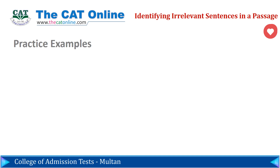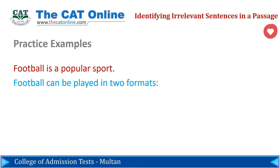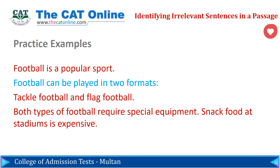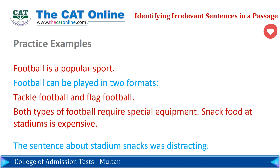Read the following passage: Football is a popular sport. Football can be played in two formats — tackle football and flag football. Both types of football require special equipment. Snack food at stadiums is expensive. Now let's move through the three questions. What is the main idea? Football. Does each sentence support the main idea? No — one sentence does not connect to football. Are there distracting sentences? The sentence about stadium snacks was distracting. It does not support the main topic of football, so it should be removed.